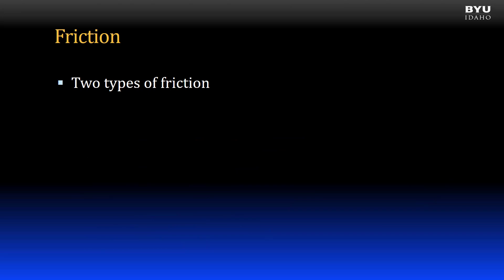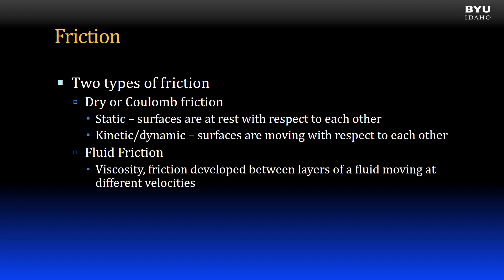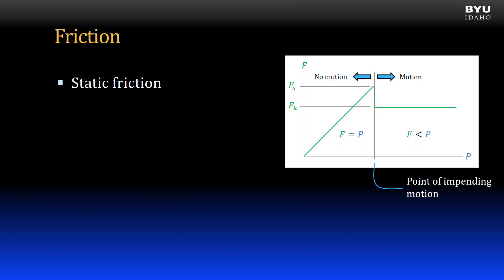There are two types of friction. The first is dry or Coulomb friction, which is what I just demonstrated. It can be divided into static friction and kinetic or dynamic friction, as previously demonstrated. The other type is fluid friction. We will focus only on dry friction in this course, and primarily on static friction.